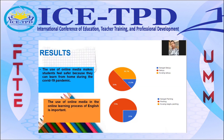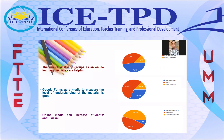The third question: 'The use of WhatsApp group as online learning media is very helpful.' Results show 38.9% answered totally helpful, 47.2% answered helpful enough, and 13.9% answered helpless. The fourth question: 'Using Google Form as a media to measure the level of understanding of the material is good.' Results show 30.6% answered excellent, 55.6% answered good, and 13.9% answered poor.